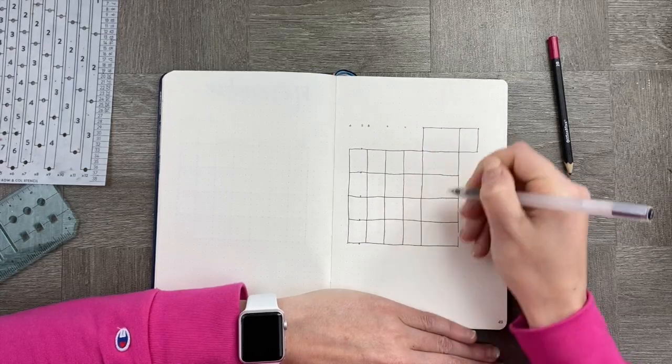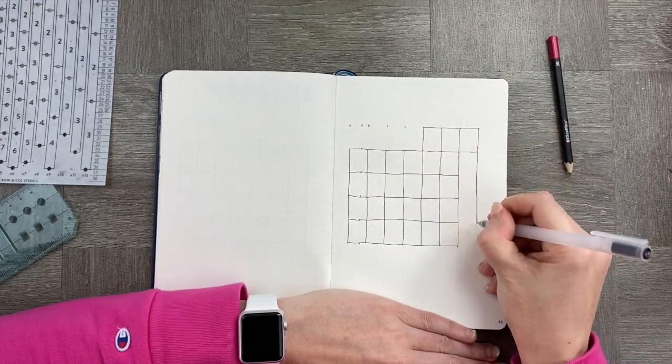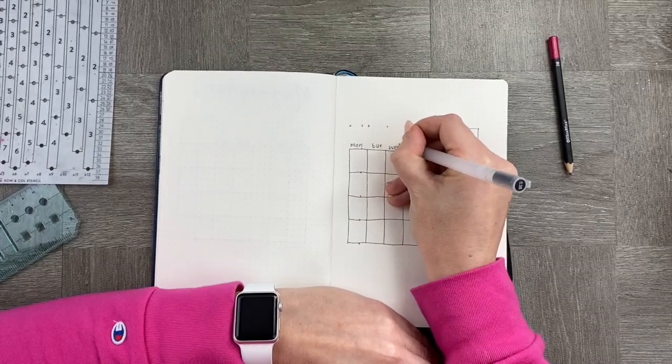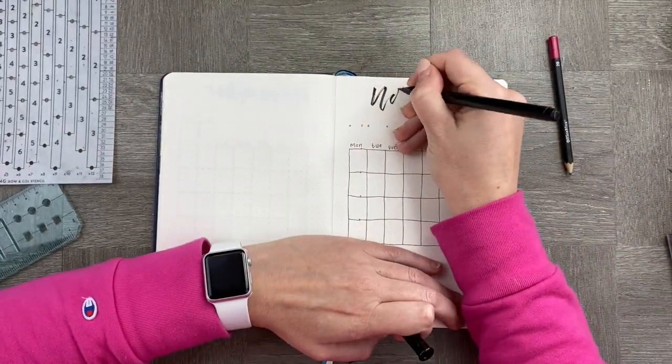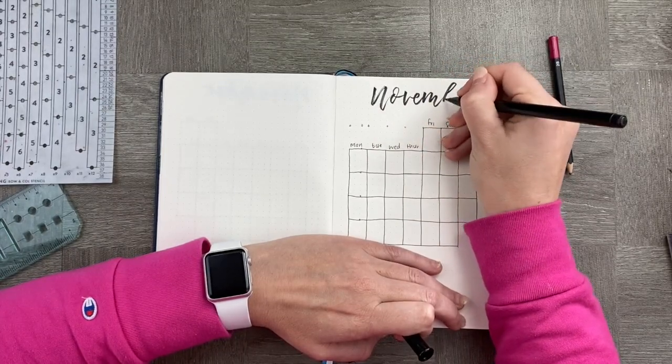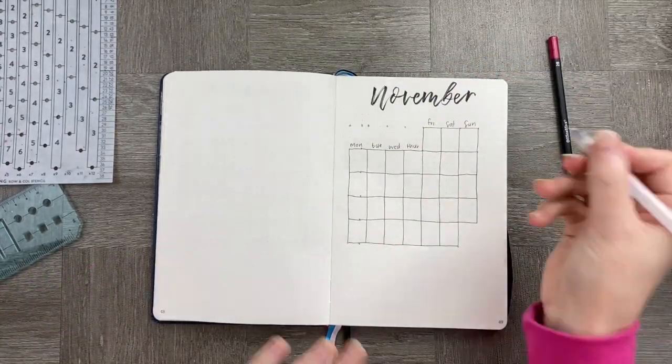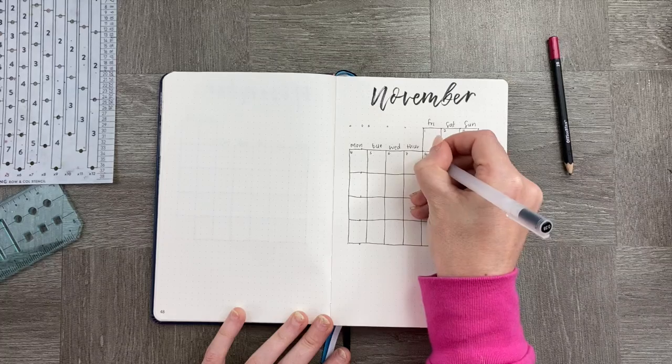I just wanted a really simple monthly calendar that you could do at any point in time and something really minimal as well. So you can see I'm just free handing it, making it really simple, and then writing Monday through to Saturday and Sunday over the top.